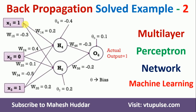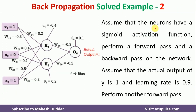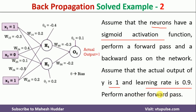Hi, welcome back. In this video I will discuss how to apply the backpropagation algorithm to update the weights in a multilayer perceptron network. This is solved example number 2; the link for other solved examples is given in the description below. The problem uses a sigmoid activation function with different sets of neurons. We have to perform a forward pass and a backward pass on this network. The actual output is 1 and the learning rate is 0.9, followed by another forward pass.